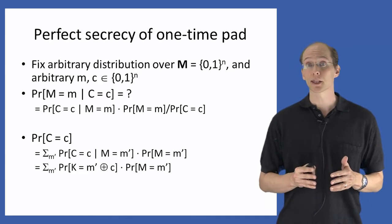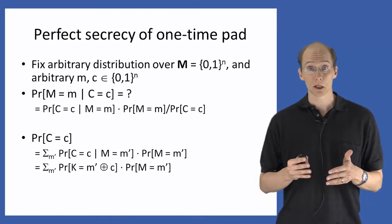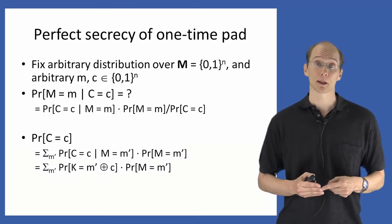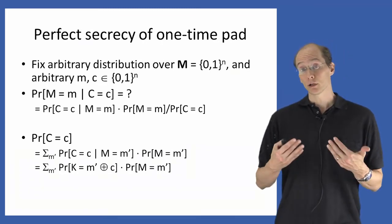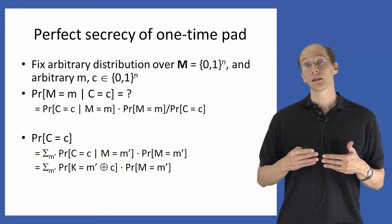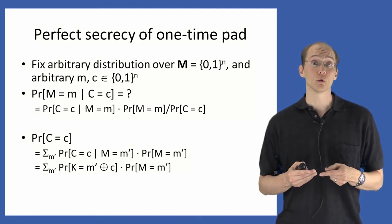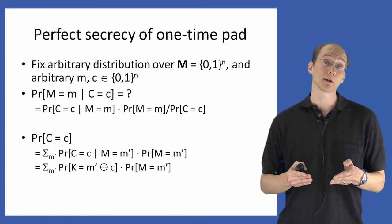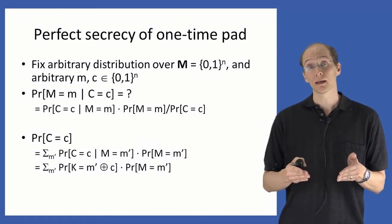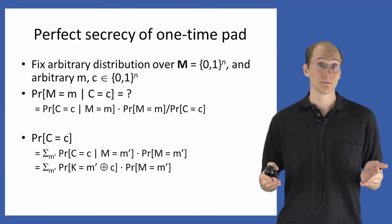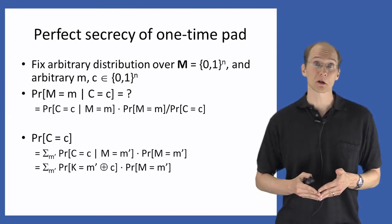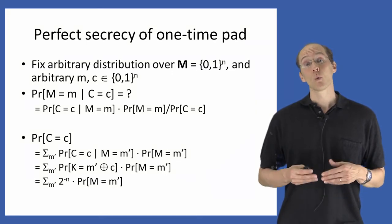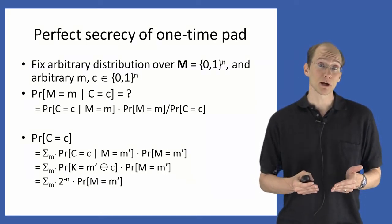We claim that the probability that the ciphertext equals c, conditioned on the message being m', equals the probability that the key equals m' XOR c. Why? If we condition on the message being m', the only way the ciphertext can equal the fixed string c is if the key equals m' XOR c. You can check this: XOR'ing message m' with key m' XOR c yields ciphertext c, and the only value of the key for which that happens is m' XOR c.